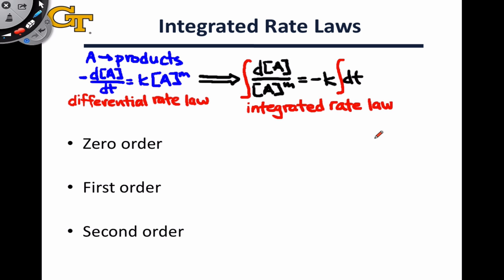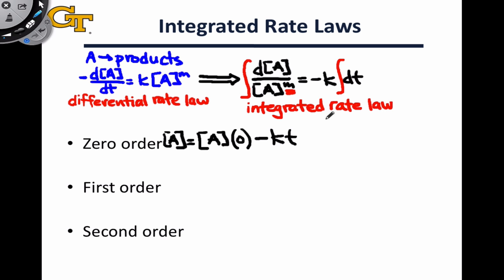The exact form of the integrated rate law is going to depend on the value of M. When M is equal to zero, we're in a zero-order situation, and this entire molarity of A to the M term becomes one. This means we're integrating dA on the left-hand side and negative K dT on the right-hand side. With an initial concentration A₀ at time equal to zero, the concentration at some arbitrary later time A is equal to A₀ minus KT. Graphically, this represents a linear decrease in A with time.